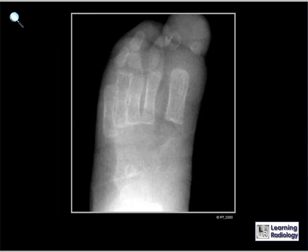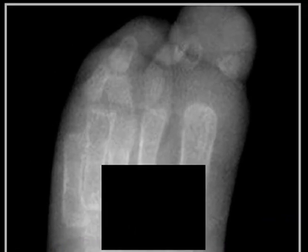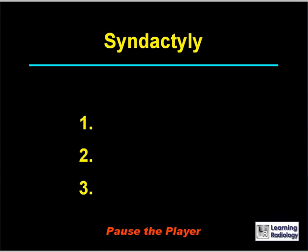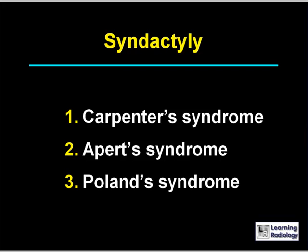Here's the next differential diagnosis. The differential diagnosis is for syndactyly. There are three major causes. The major causes of syndactyly include Carpenter syndrome, Apert syndrome, and Poland syndrome.